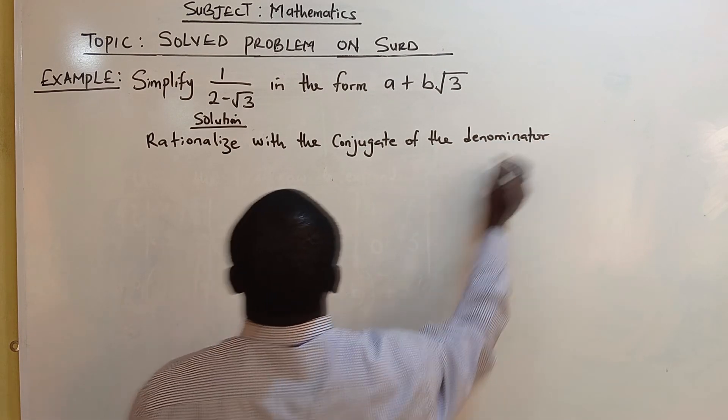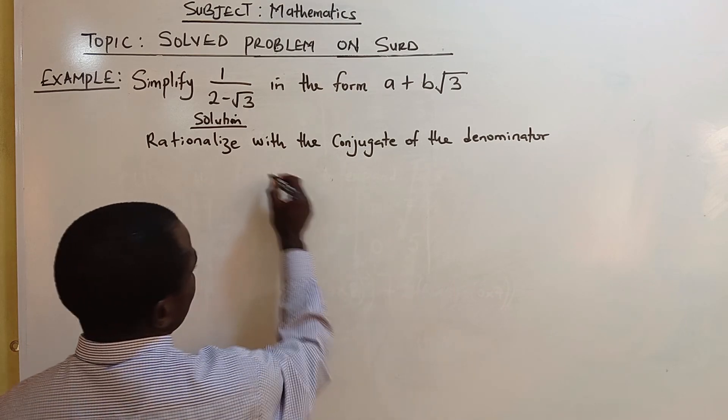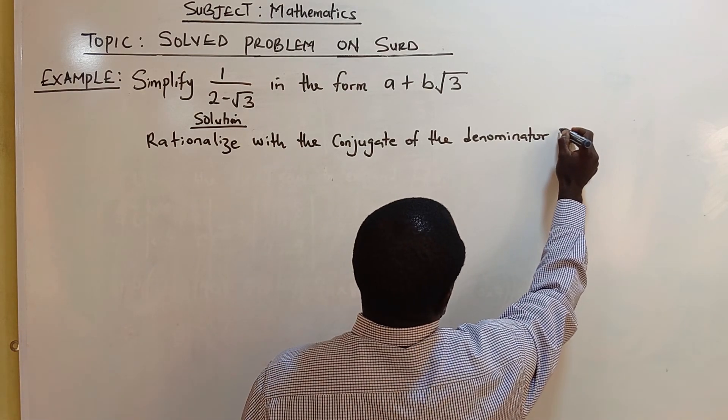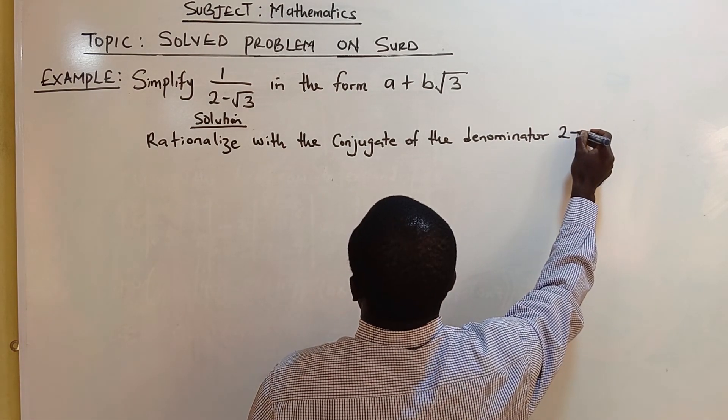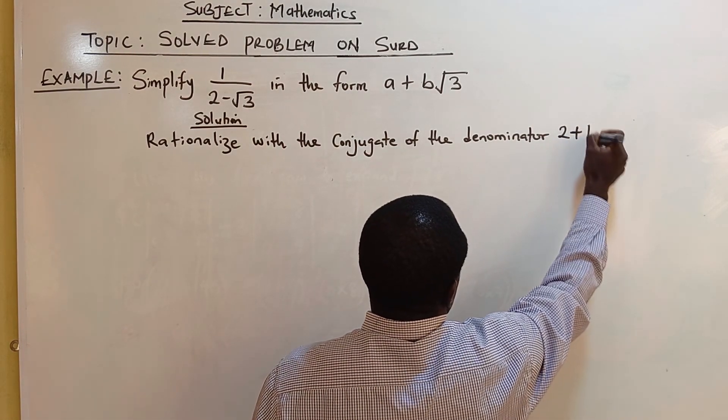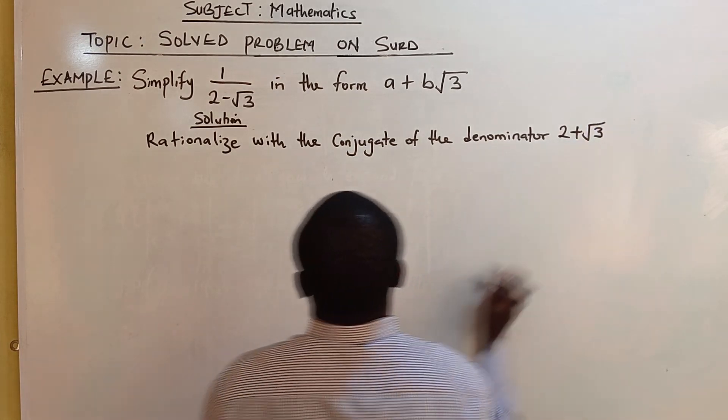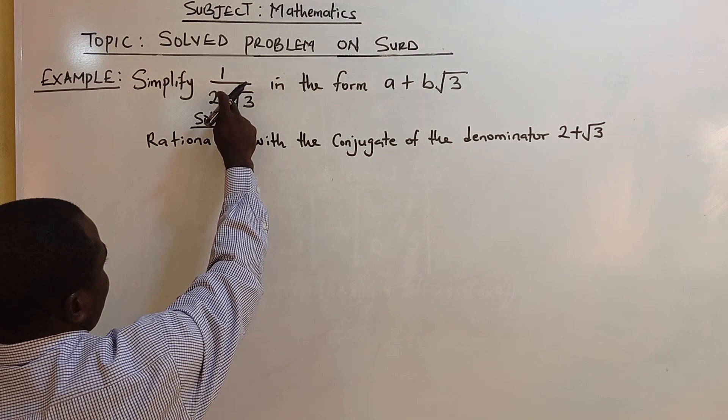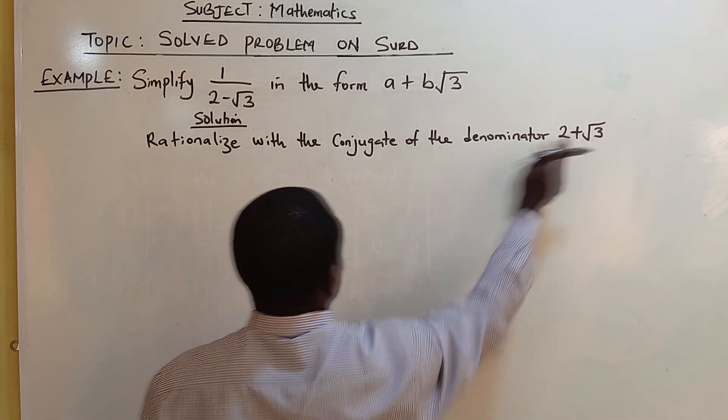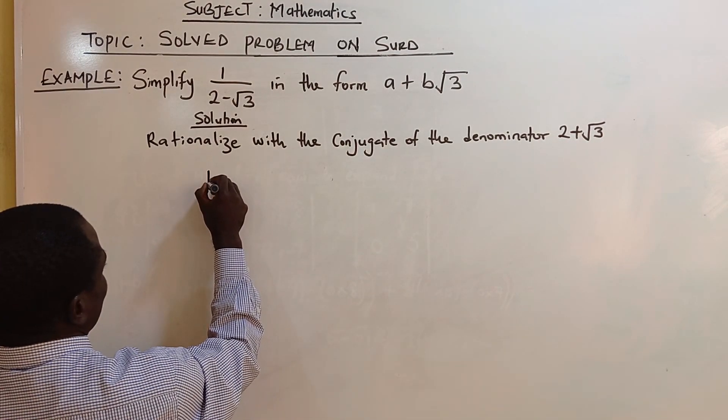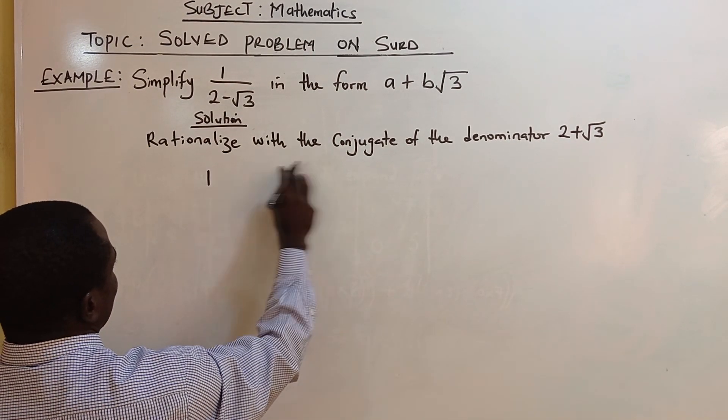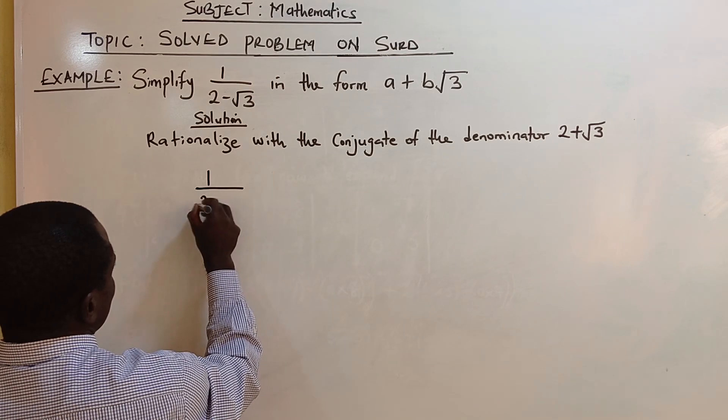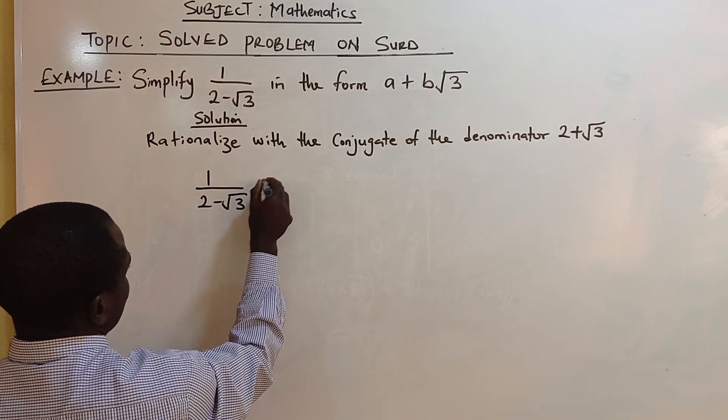The conjugate of the denominator 2 minus root 3, when you have minus here, you turn the minus to positive. You now have 1 over 2 minus root 3 times the conjugate.